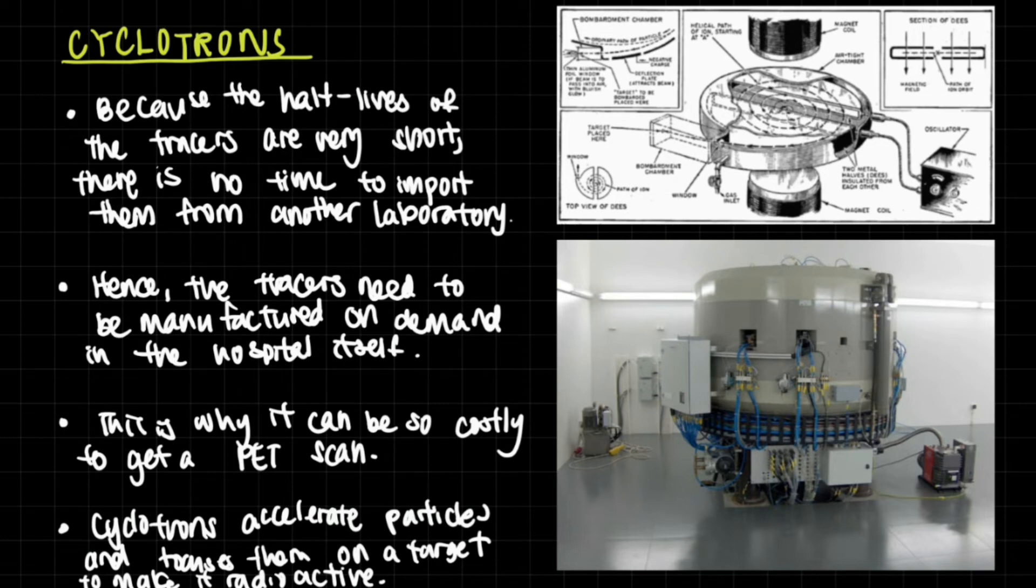But what is a con is that you need cyclotrons in order to make the radioactive tracer. Because the half-lives of the tracers are very, very short, you don't want a half-life like a few years, because then it will keep emitting gamma rays inside your body. Gamma rays are highly energetic, and they could actually cause ionization inside the patient's body. So you just want it to get over with as soon as possible. So they choose certain radioactive tracers like fluorine-18 that have shorter half-lives.